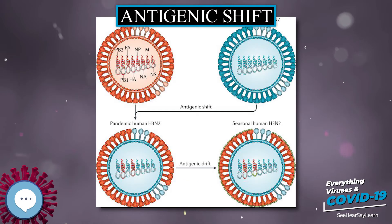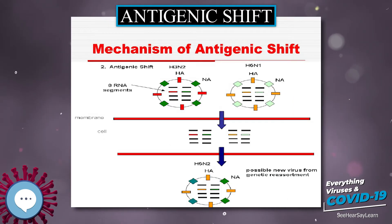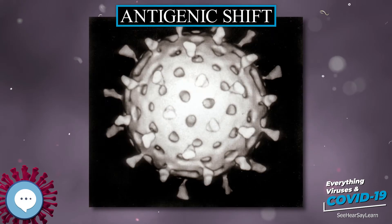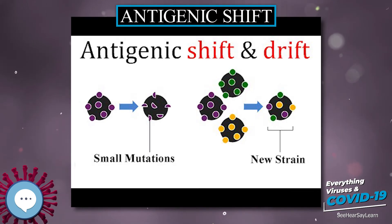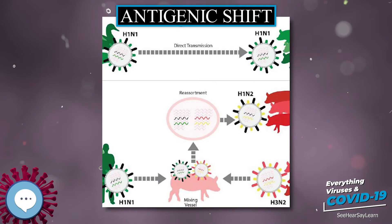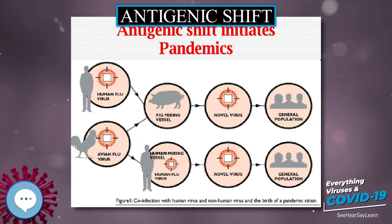Antigenic shift is a specific case of reassortment or viral shift that confers a phenotypic change. Antigenic shift is contrasted with antigenic drift, which is the natural mutation over time of known strains of influenza, or other viruses more generally, which may lead to a loss of immunity or a vaccine mismatch. Antigenic drift occurs in all types of influenza including influenza A, influenza B, and influenza C.